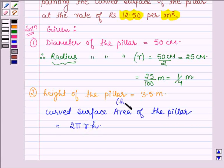Denoting the height by h = 3.5 m, we have: curved surface area = 2 × (22/7) × (1/4) × 3.5 m².